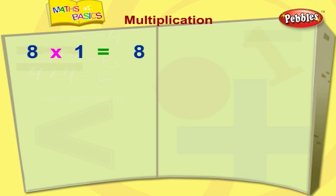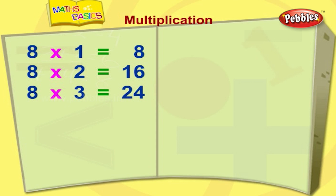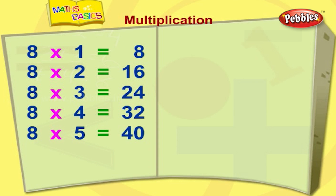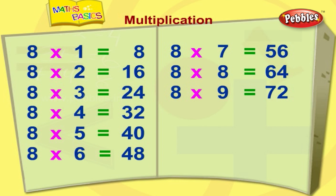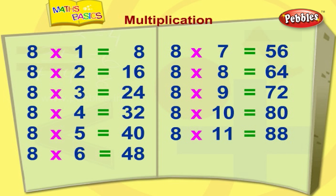Eight ones are eight. Eight twos are sixteen. Eight threes are twenty-four. Eight fours are thirty-two. Eight fives are forty. Eight sixes are forty-eight. Eight sevens are fifty-six. Eight eights are sixty-four. Eight nines are seventy-two. Eight tens are eighty. Eight elevens are eighty-eight. Eight twelves are ninety-six.